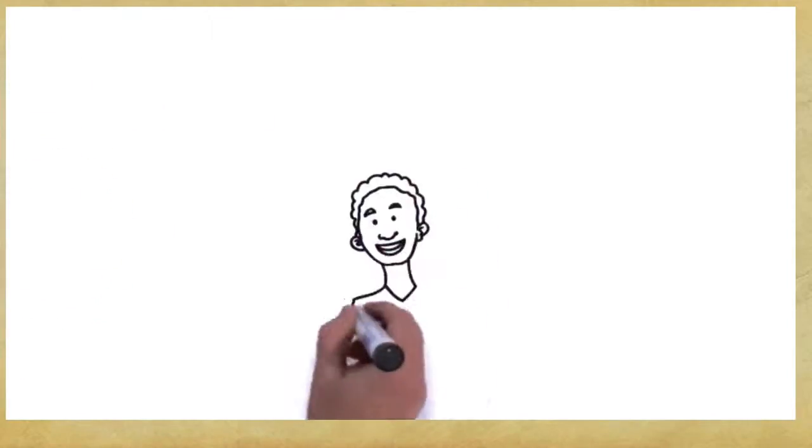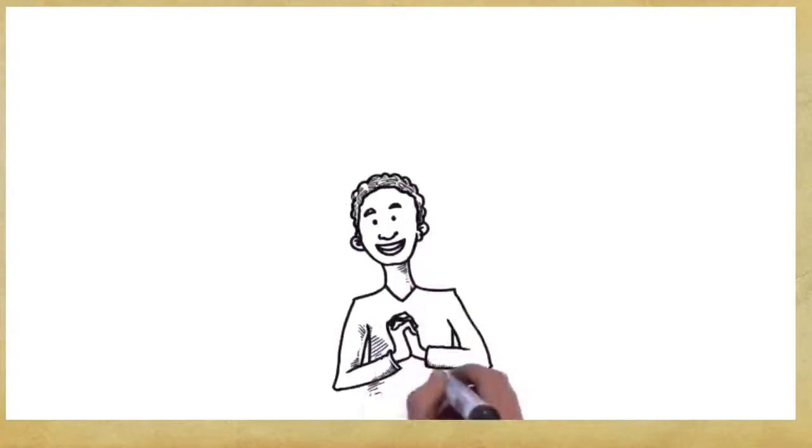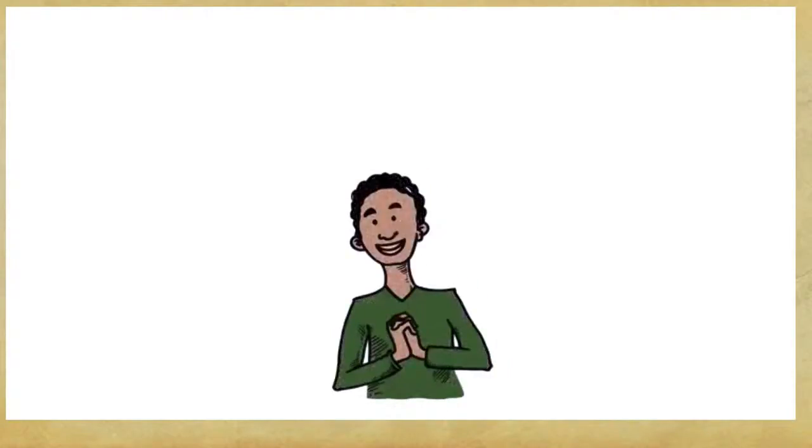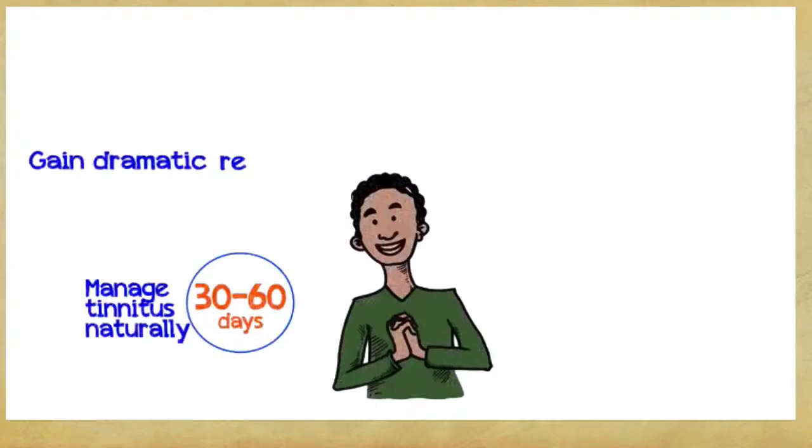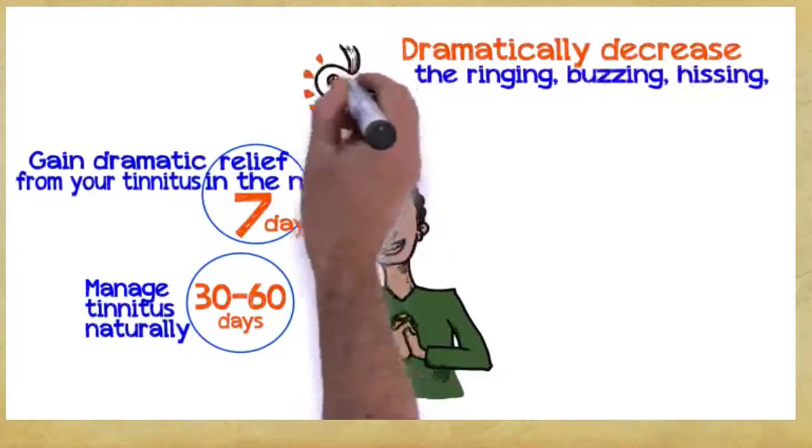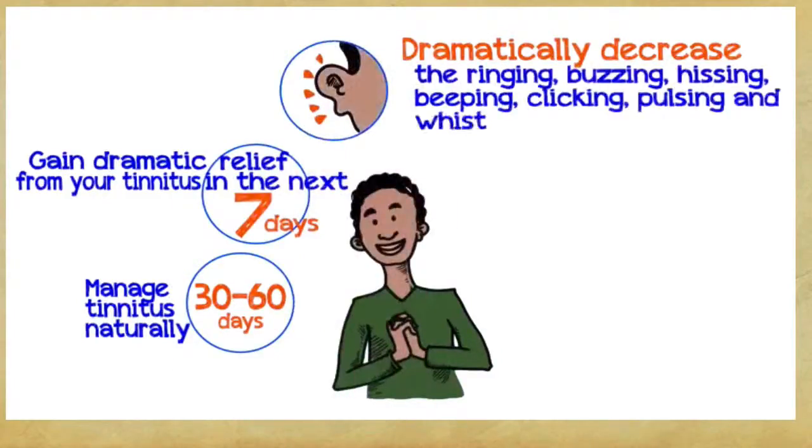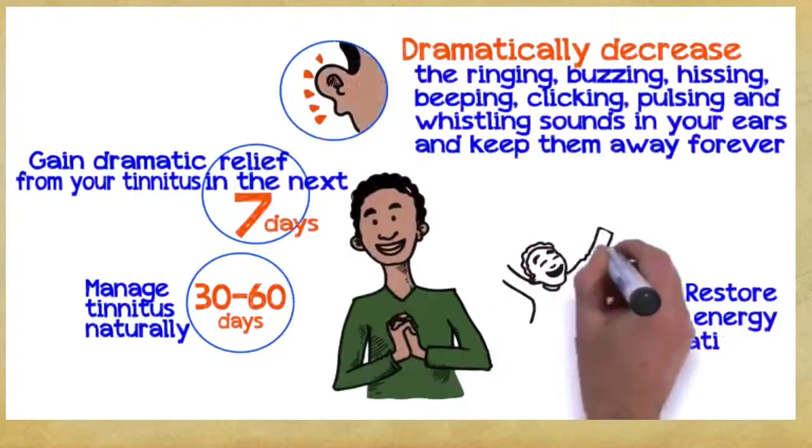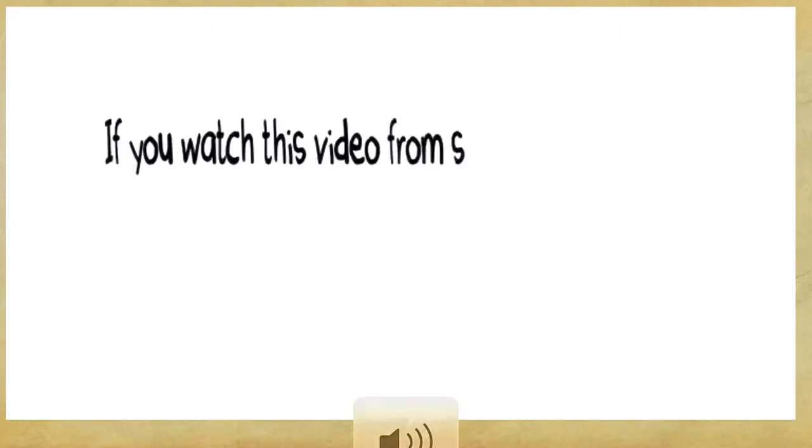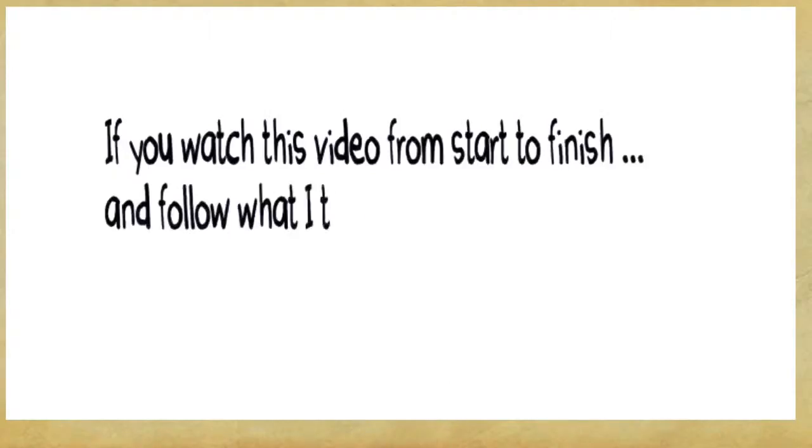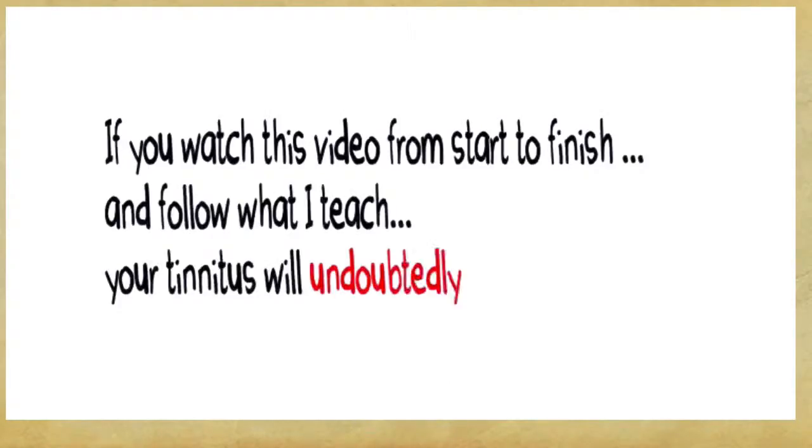So what can you gain if you embrace these three easy principles? You can manage tinnitus naturally within 30 to 60 days, gain dramatic relief from your tinnitus within the next seven days, dramatically decrease the ringing, buzzing, hissing, beeping, clicking, pulsing, and whistling sounds in your ears and keep them away forever. Restore your energy and dramatically improve the quality of your life, guaranteed.